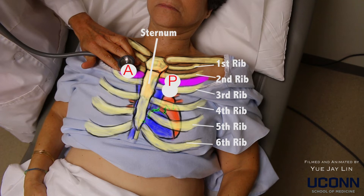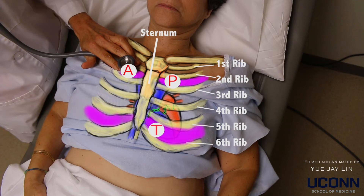Staying left of the sternum and moving down to the fifth intercostal space is where we can listen to the blood flow from the tricuspid valve. Moving laterally to about here is where you can listen to the blood flow from the mitral valve.